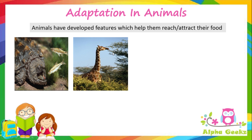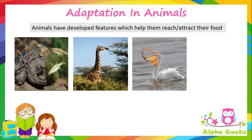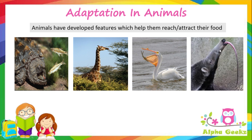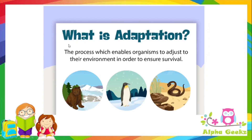Pelicans have a long beak and a large throat pouch used for catching prey and draining water from the scooped-up contents before swallowing. Anteaters have no teeth but have long tongues which allow them to lap up 35,000 ants and termites, which they swallow whole, each day.